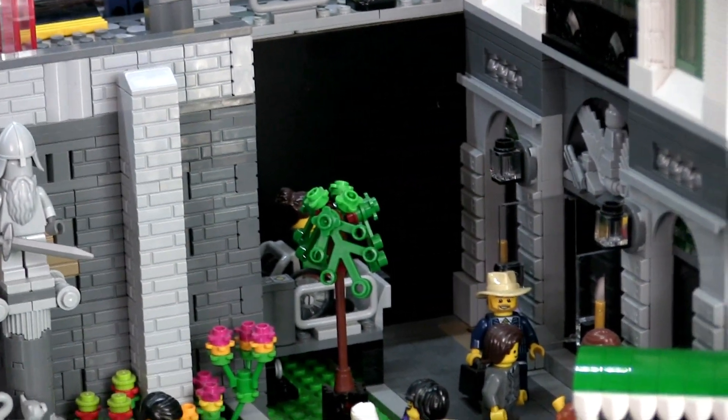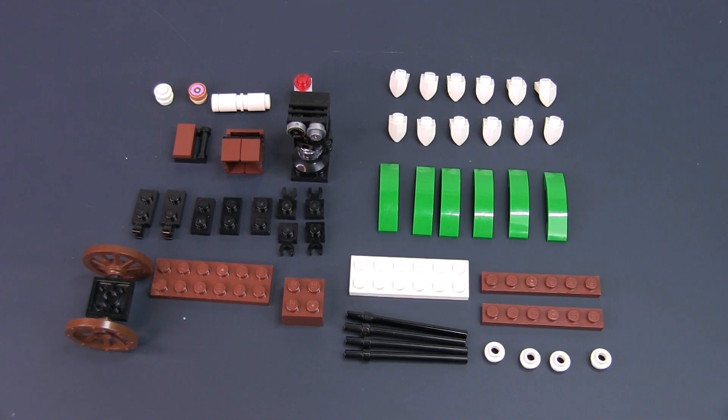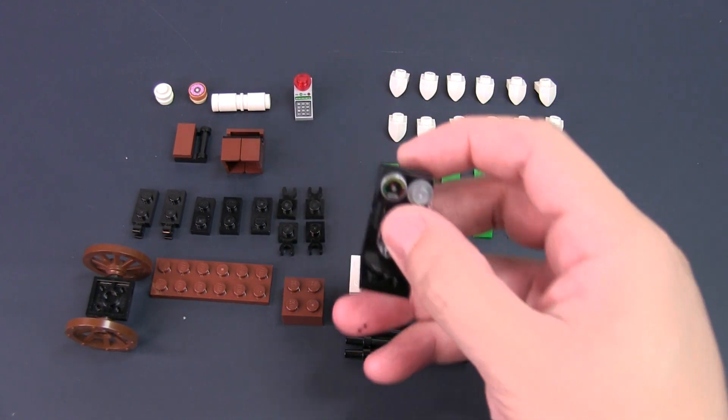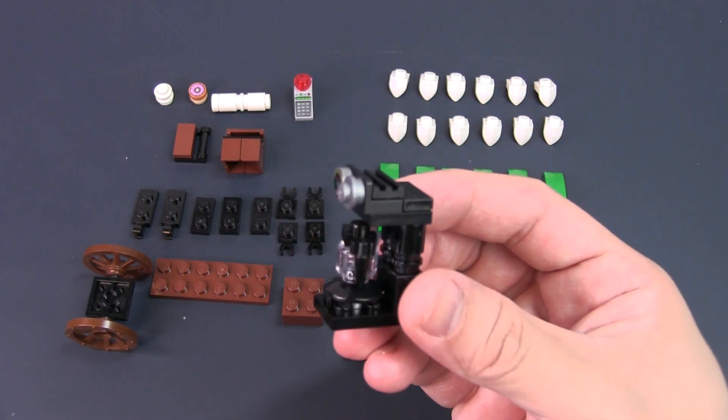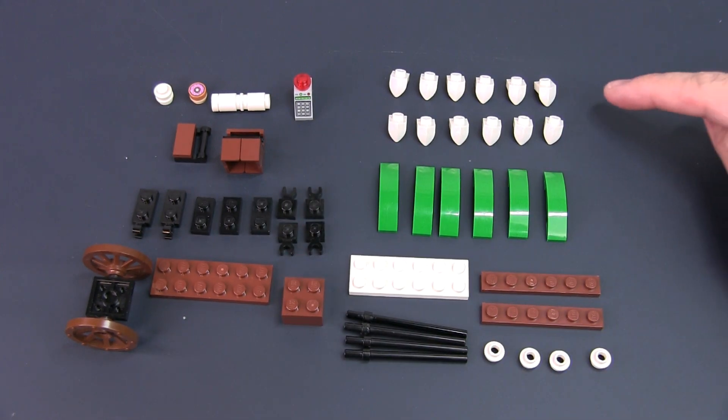So let's get started with the tutorial and these are the parts you need. As mentioned, you need the coffee maker which I taught in a previous tutorial and you can find the link on the top right of the screen. For the rest of the cart, here's what you need.